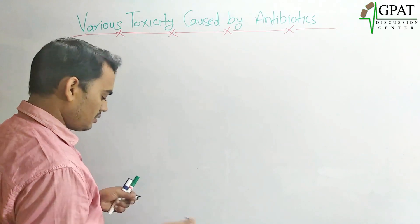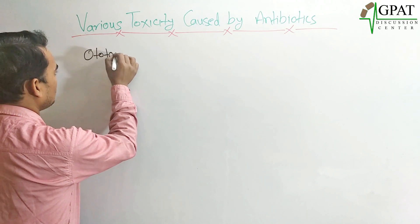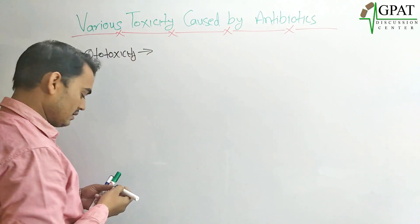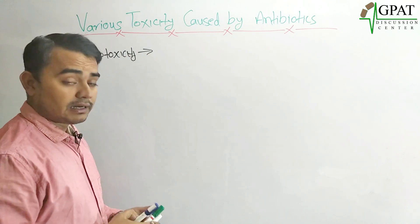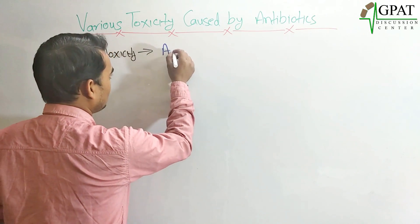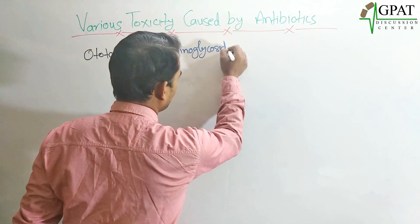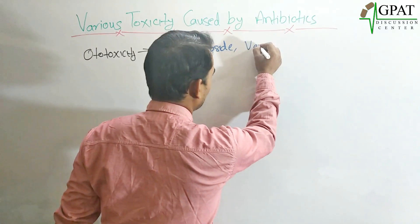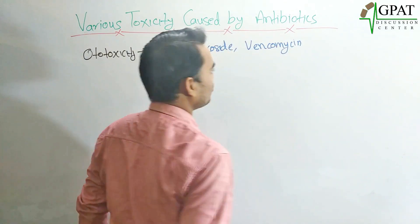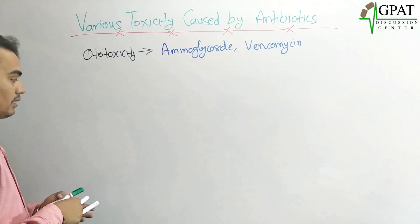The first toxicity is ototoxicity. Ototoxicity is majorly caused by aminoglycoside antibiotics as well as vancomycin. So aminoglycosides and vancomycin are the antibiotics which cause ototoxicity.